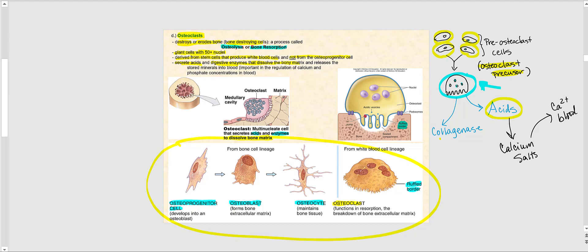Osteoclasts also secrete enzymes such as collagenase, which dissolves and breaks down the organic matrix — the osteoid, primarily the collagen fibers. So collagenase breaks down the collagen fibers that make up most of the organic matrix. One final point: osteoclasts have what are called ruffled borders — extensions of their plasma membrane that increase surface area, allowing greater release of acids and collagenase to destroy and erode the bony matrix.